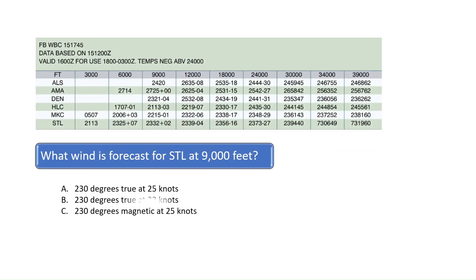What wind is forecast for STL at 9,000 feet? The chart shows a winds and temperature aloft forecast, and the numbers can be a bit confusing at first. However, once you know how to read them, they are not difficult. The first two numbers indicate the wind direction and the second two numbers indicate the wind speed. The first two numbers are 2-3, so the wind direction is 230 degrees. The second two digits are 3-2, so the wind speed is 32 knots. Thus, the wind forecast for STL is 230 degrees true at 32 knots. The last two digits indicate temperature, which is 2 degrees Celsius.